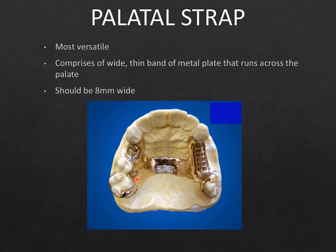Next is the palatal strap. It is similar to the single palatal bar but its thickness is less and it is more spread out — like a thin sheet spread across the palate rather than a bar. This makes it more comfortable to the tongue. It is again employed mainly in Kennedy's Class 3 situations and should have sufficient rests to provide vertical support. The minimum thickness of the palatal strap is 8 mm and should not exceed this.